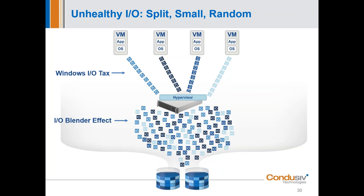So you've got the options we talked about: throw more hardware at it, try to rewrite code (which isn't going to happen), premature upgrades, and over-provisioning — which is very common. But what are we really getting out of that over-provisioning? We want to look at the space that's being used — we can get that to run 30–40% faster.